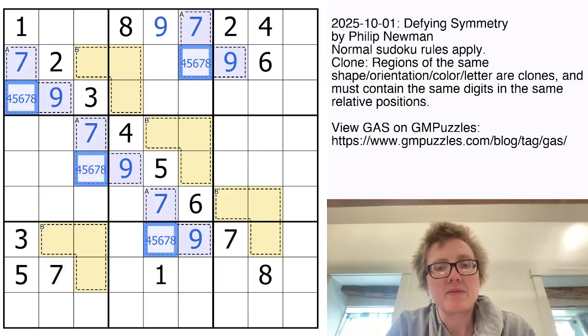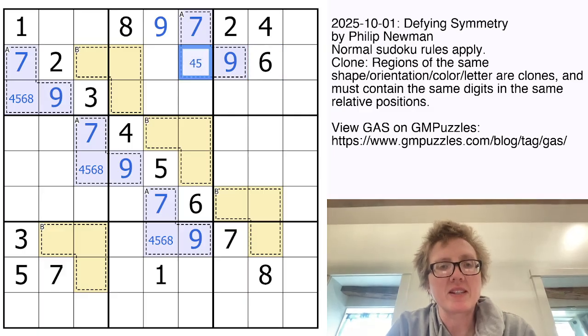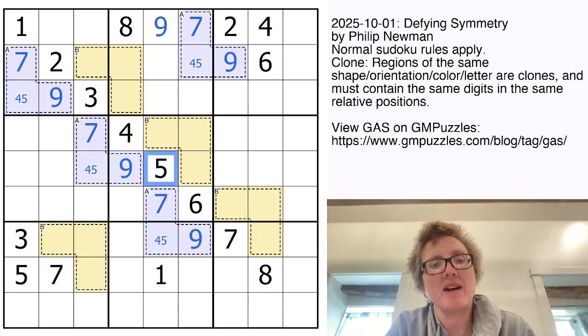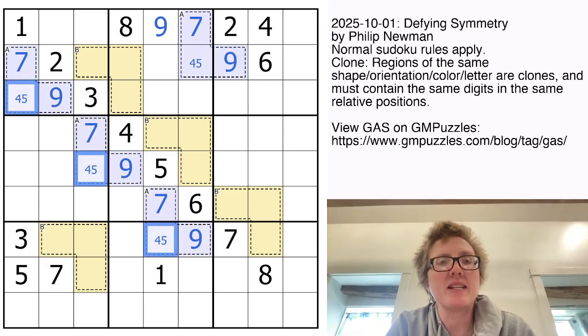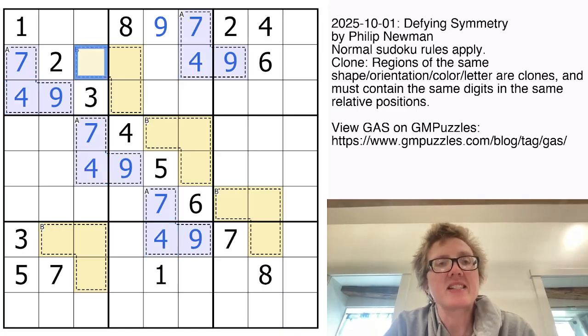And so we're going to place sevens there and there. So we can eliminate seven from those cells, and we can also eliminate eight because this one sees an eight, and we can eliminate six because it also sees a six. And I just noticed it's also not a five because it sees this five. So this clone is going to be exactly seven, four, nine.